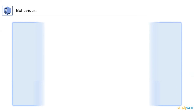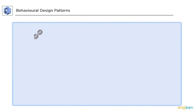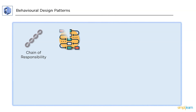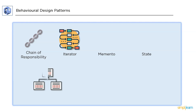The behavioral design pattern deals with communication between classes and objects. That means if you want to change the behavior of a class and want it to affect other classes of the project as well, you use behavioral patterns. We have 10 types of design patterns available in this category.